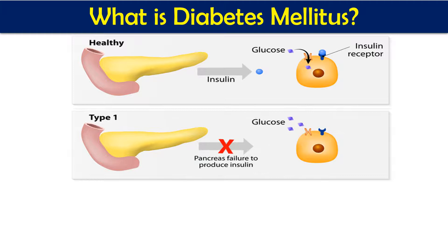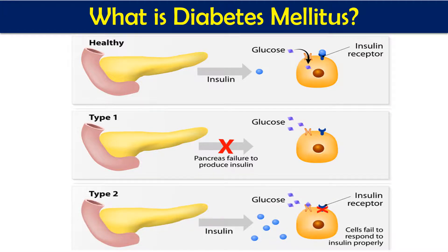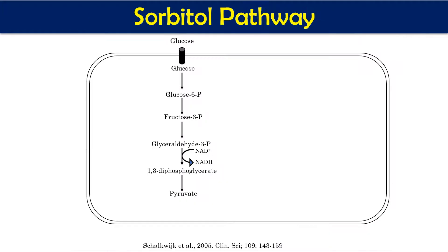In Type 1 diabetes mellitus, the pancreas is unable to produce sufficient insulin, causing insulin deficiency. Without insulin, it will not bind to the receptor and the glucose channel will not open, so glucose will not enter the cells. Similarly in Type 2 diabetes mellitus, sufficient insulin is present but it is not able to bind to the receptor, so cells are not responding to the insulin.